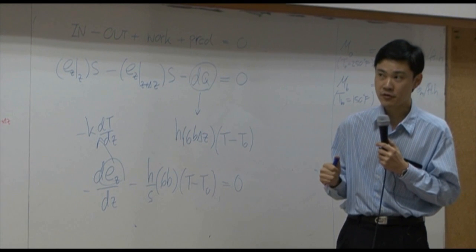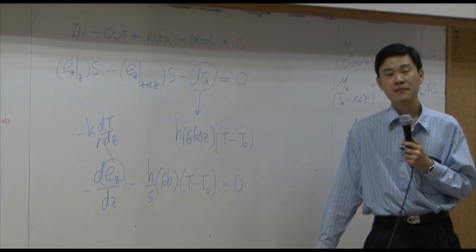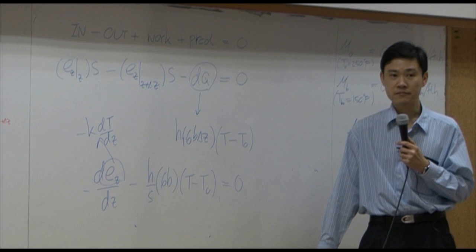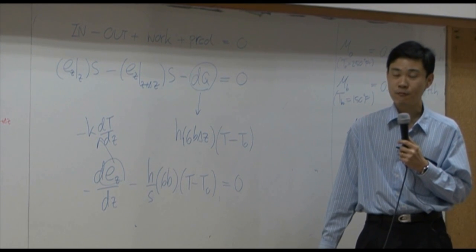At Z equal to zero, T is T1. That's one. That's the first one. What about the second one?